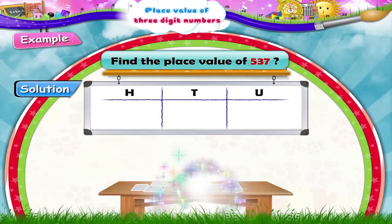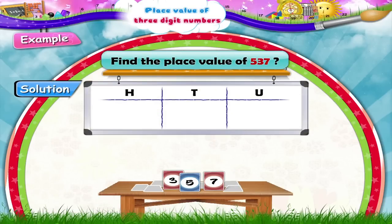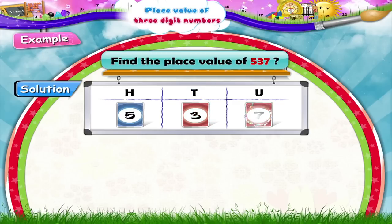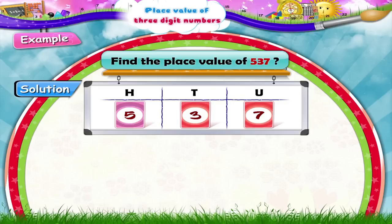Let's pick up any three cards and place them one by one in each column. We place the number 5 in the hundreds column, the number 3 in the tens column, and the number 7 in the units column. Can you read this number, Starry? Yes, this number is five hundred and thirty-seven. In what place is the number 5?